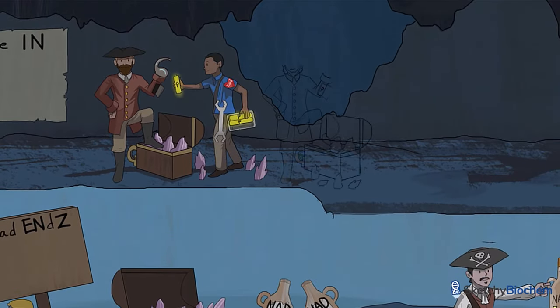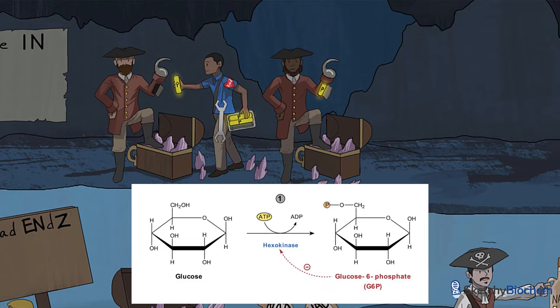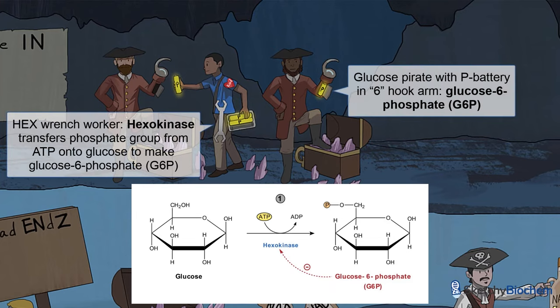In order to keep glucose inside the cell and initiate glycolysis, it must be trapped first. In step one, hexokinase uses ATP to phosphorylate glucose to make glucose-6-phosphate, better known as G6P. A kind hex wrench worker takes a phosphate battery from his ATP battery pack and adds it to the six-hook arm of the glucose pirate to make G6P.